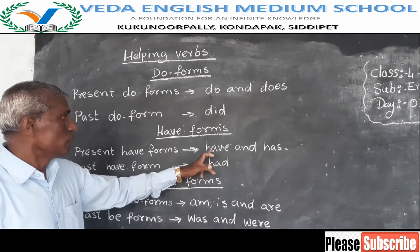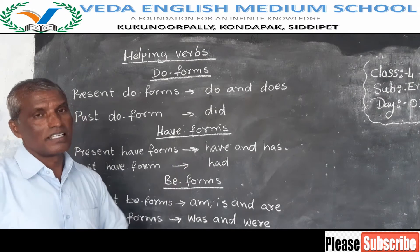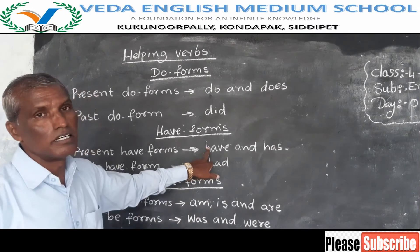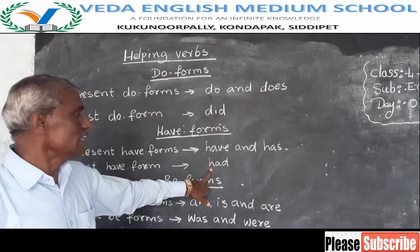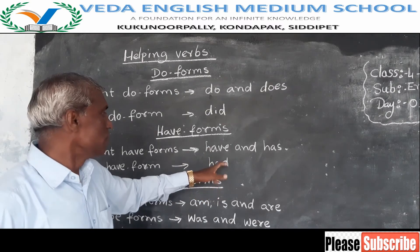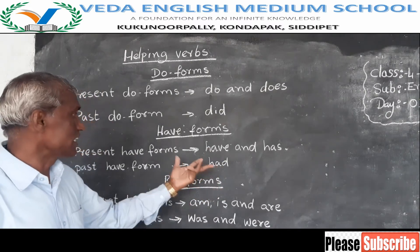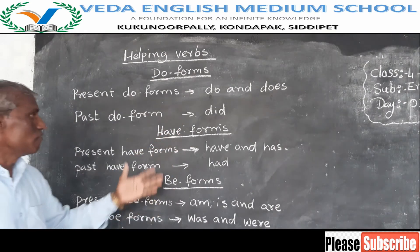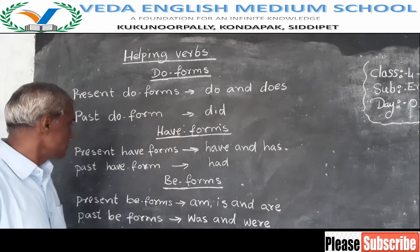So if you find have plus V3, it is present perfect tense. Similarly, had plus V3 is past perfect tense. That means to make perfect tense, we have to use have forms.